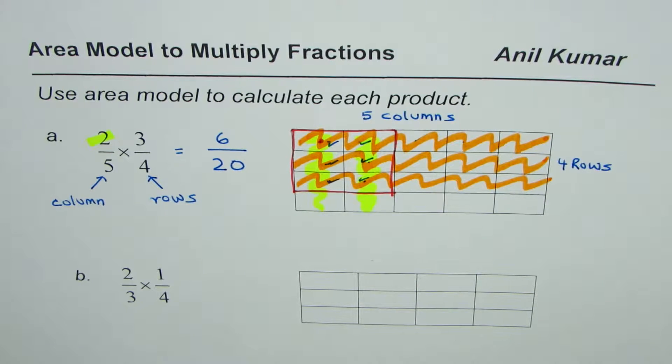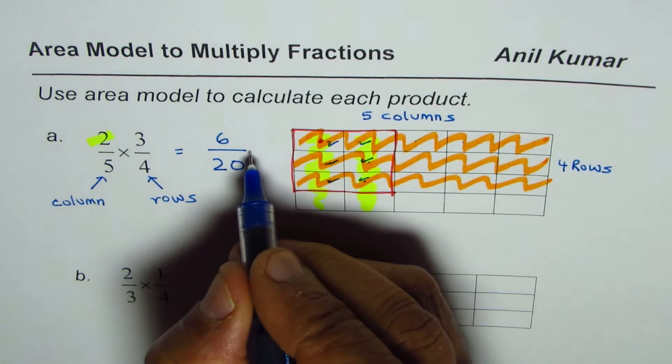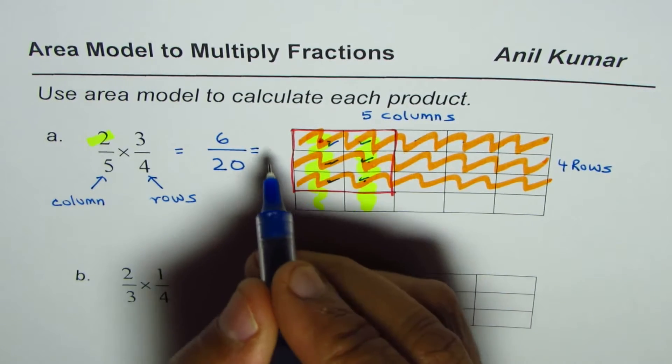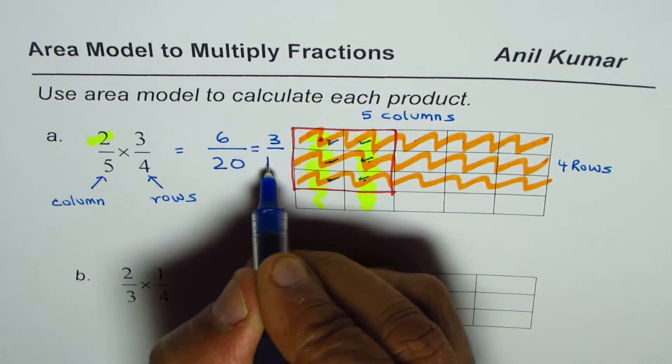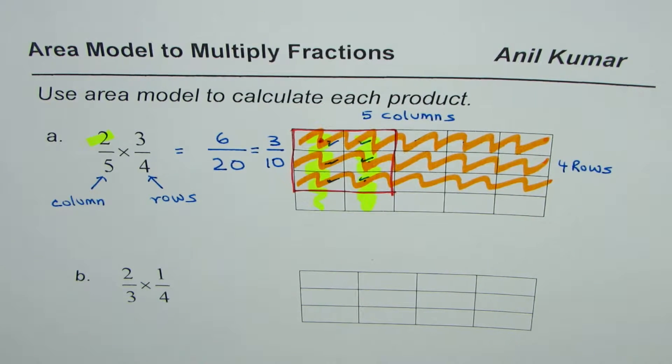So six out of twenty is the product of this fraction and we found it by calculating the area. Six have been selected out of twenty exactly similar rectangles. Now you can also simplify your answer and write it in the lowest terms. Six divided by twenty, you can divide both by two, so we could write this as three out of ten also.